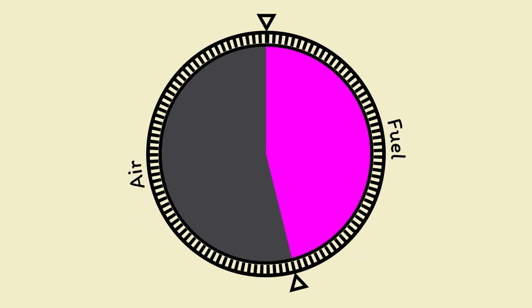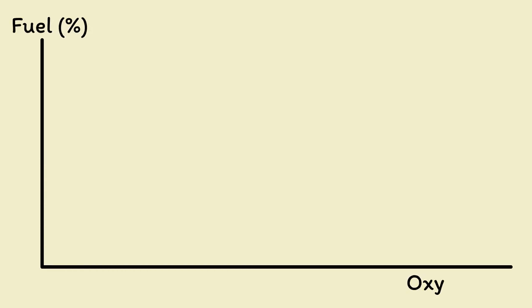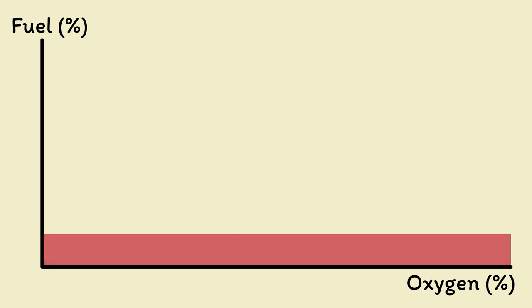The exact proportion of fuel vapour to air needed to catch light does vary, but we can represent that on a flammability diagram. Up the side here, we have the percentage of hydrocarbon gas, and along the bottom, we have the percentage of oxygen. If you only have a tiny amount of hydrocarbon gas in the air, clearly, it's not going to ignite. We say the mixture is too lean.